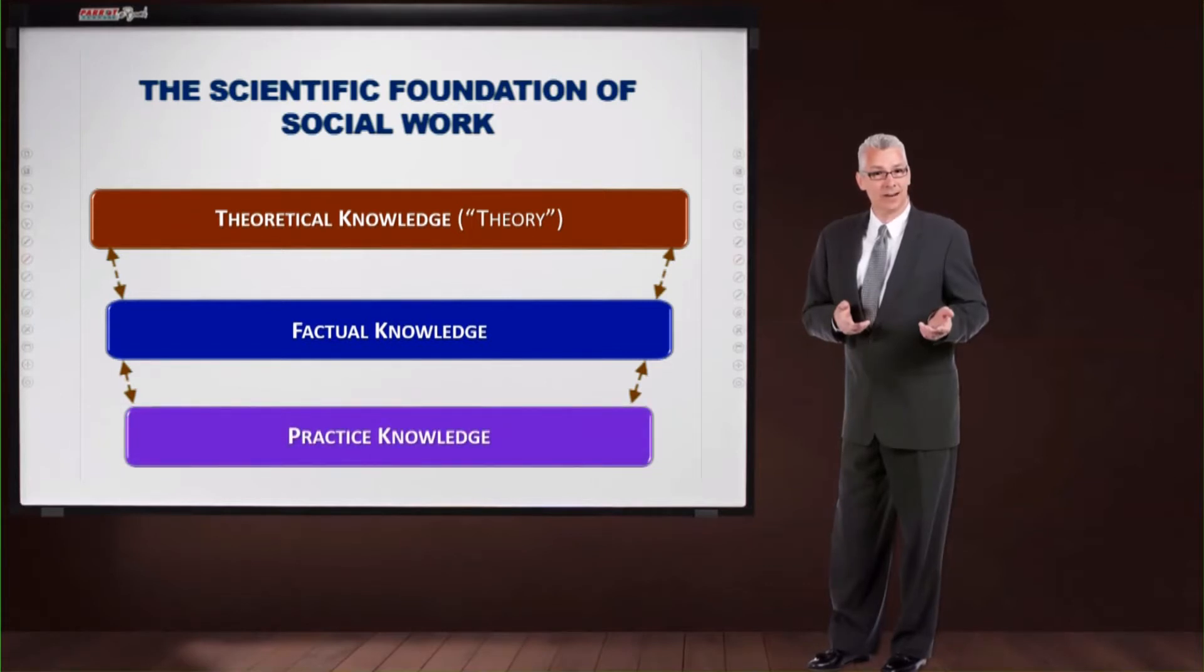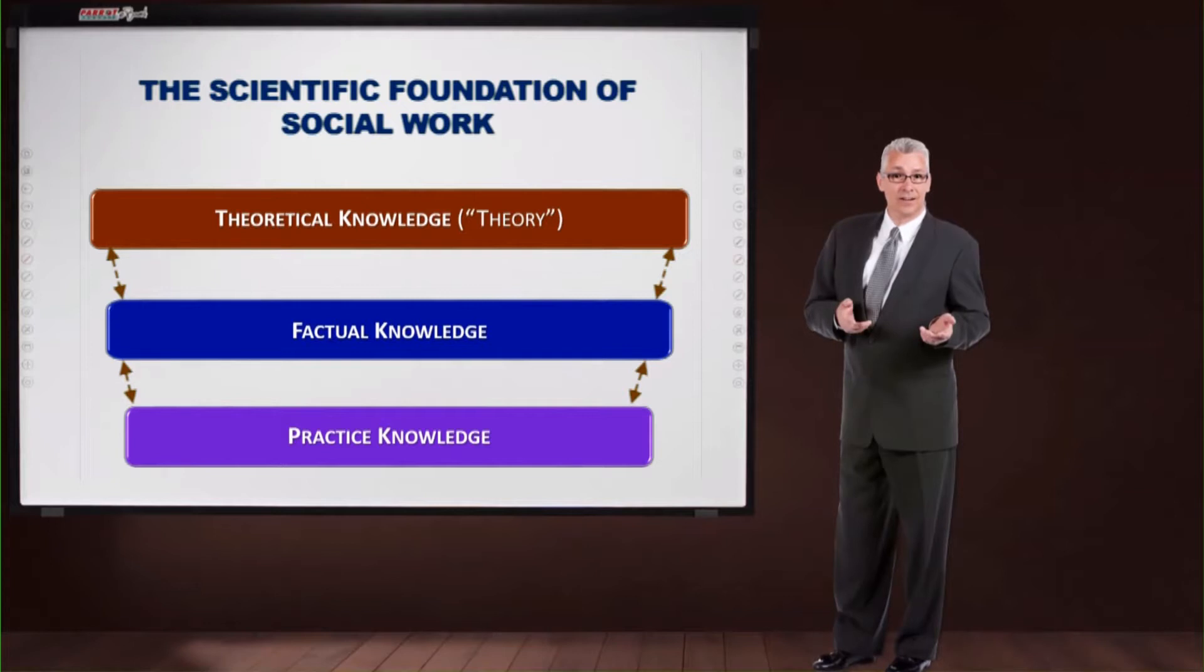A theory is basically a group of related hypotheses, concepts, and constructs, based on facts and observations, that attempts to explain a particular phenomenon. We use these theories in social work to predict, explain and assess situations and behaviors.